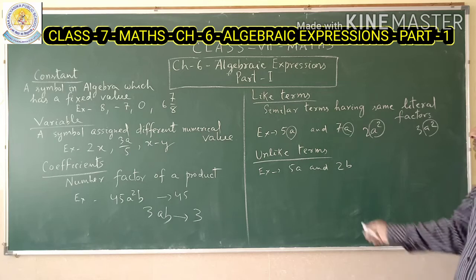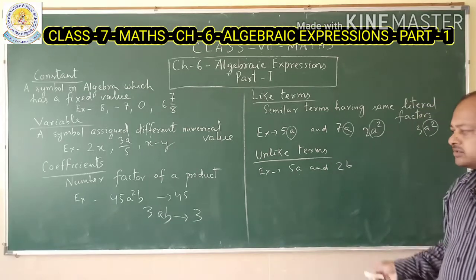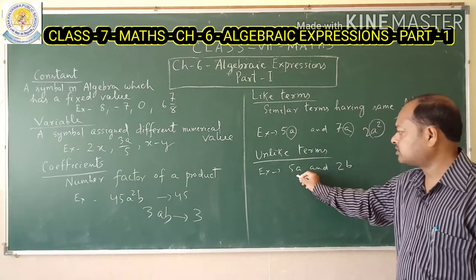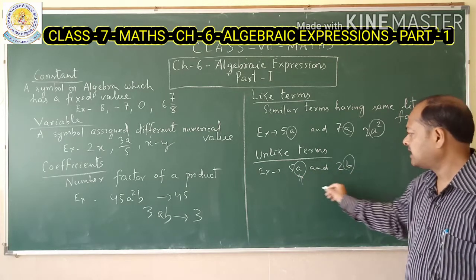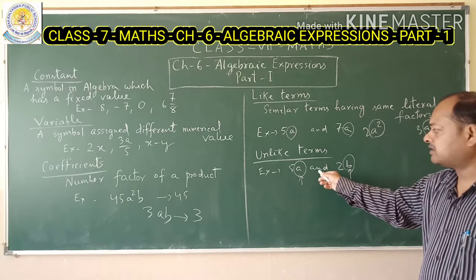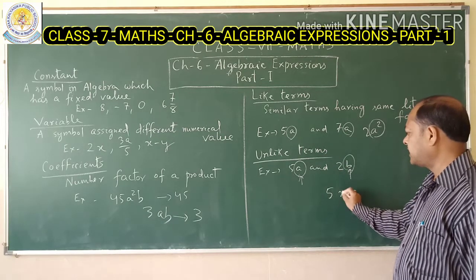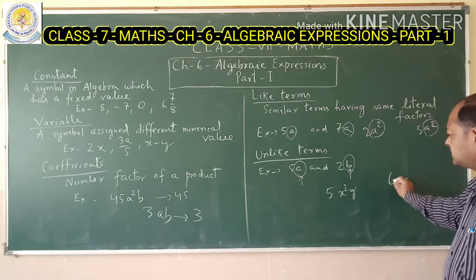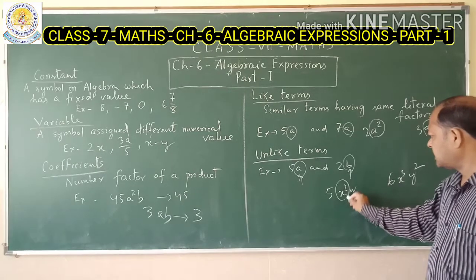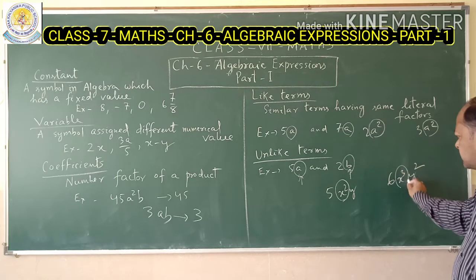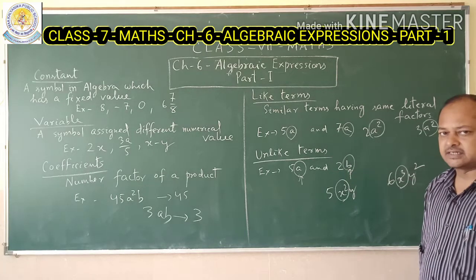Now what are unlike terms? Look at 5a and 2b — the literal factors are different: 'a' is in one and 'b' is in the other, so they are unlike terms. Another example: 5x²y and 6x³y² — here x² and x³ are different, so these are not like terms. They are called unlike terms.